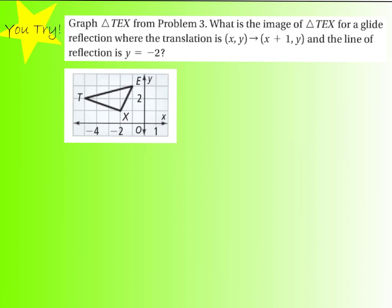Here's a you-try example of a glide reflection for you to do. It's the same triangle — you just need to do a different translation and reflect over a different line.